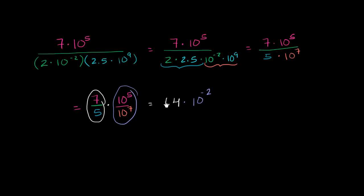It's a digit between 1 and 9, including 1 and 9. And it's being multiplied by 10 to some power. So this is, it looks like we're done. This simplified to 1.4 times 10 to the negative 2.